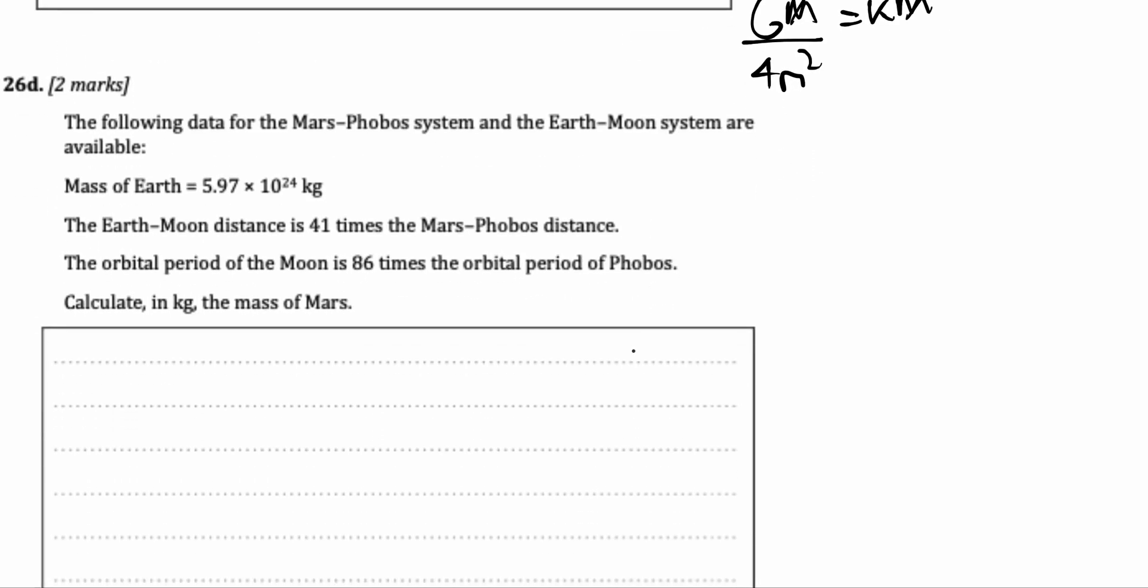Next question. The following data for the Mars-Phobos system and the Earth-Moon system are available. Mass of the Earth is 5.97 times 10 to the power of 24. The Earth-Moon distance is 41 times the Mars-Phobos distance. The orbital period of the Moon is 86 times the orbital period of Phobos. Calculate in kg the mass of Mars.